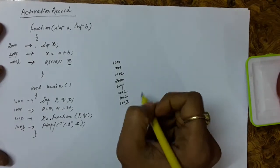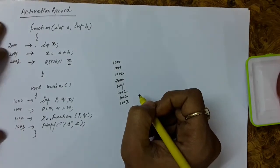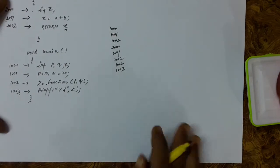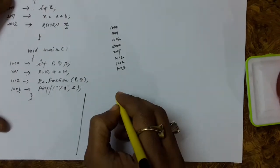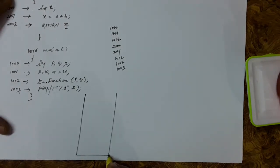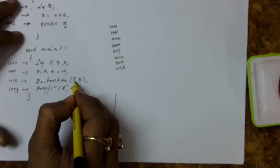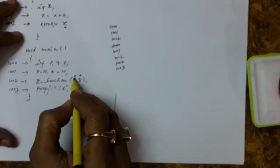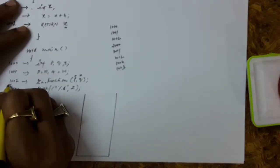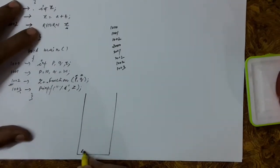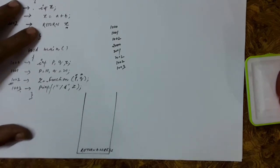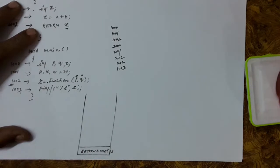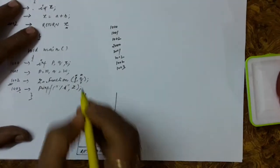So how do we ensure that this order is followed? We will do that with the help of the activation record. Whenever you call a function, on the stack region in the RAM, these are the parameters with which you have called the function. You know that at location 1002, this function has been called. So the very first thing is the return address — you should know at what point you have to come back after the completion of the function. Then you should know what are the actual parameters. P and Q are the actual parameters.